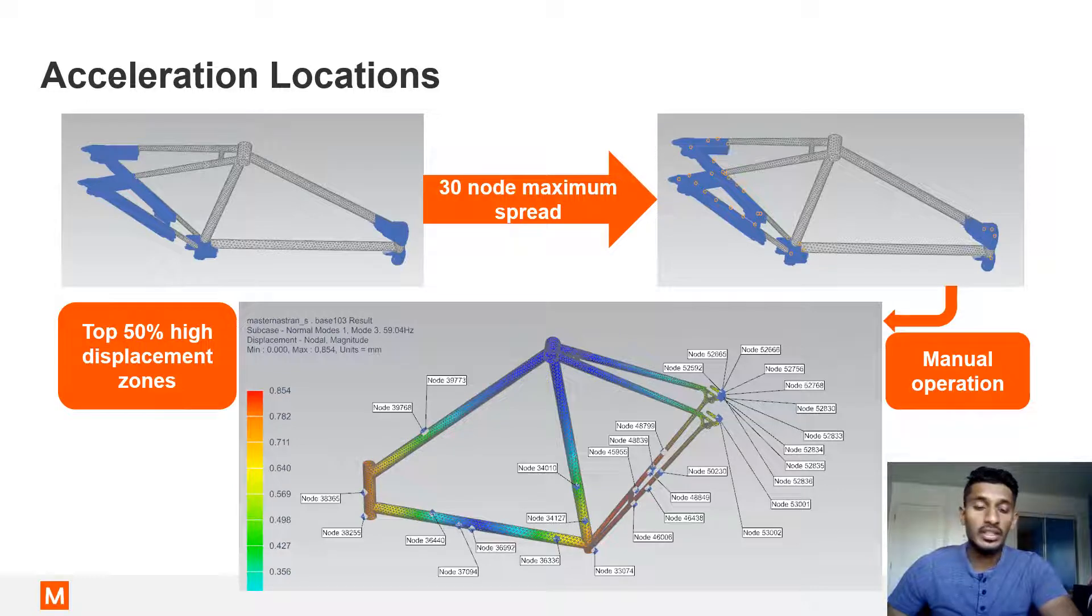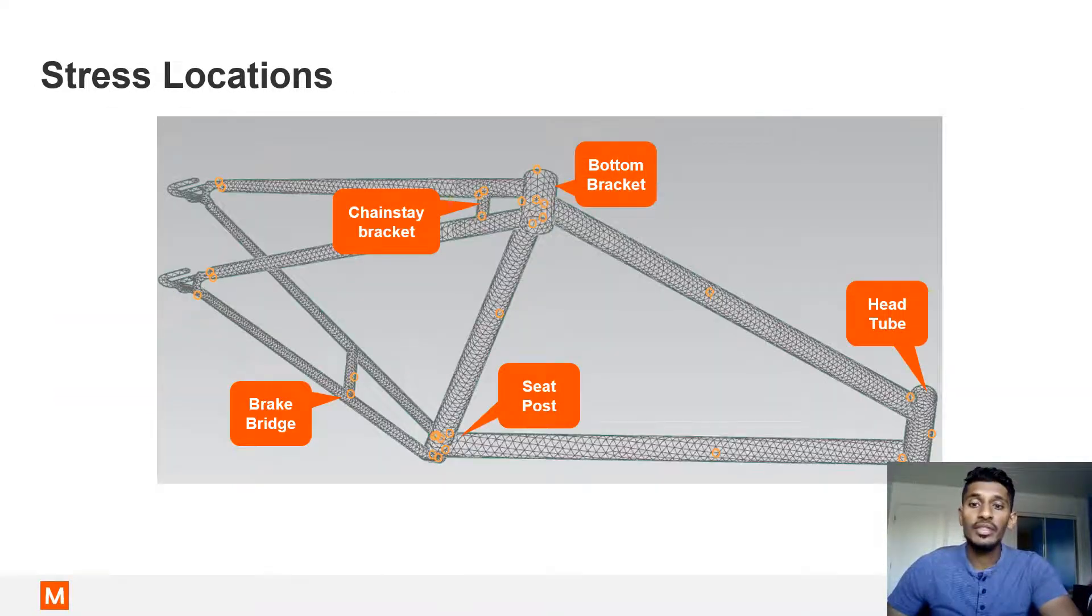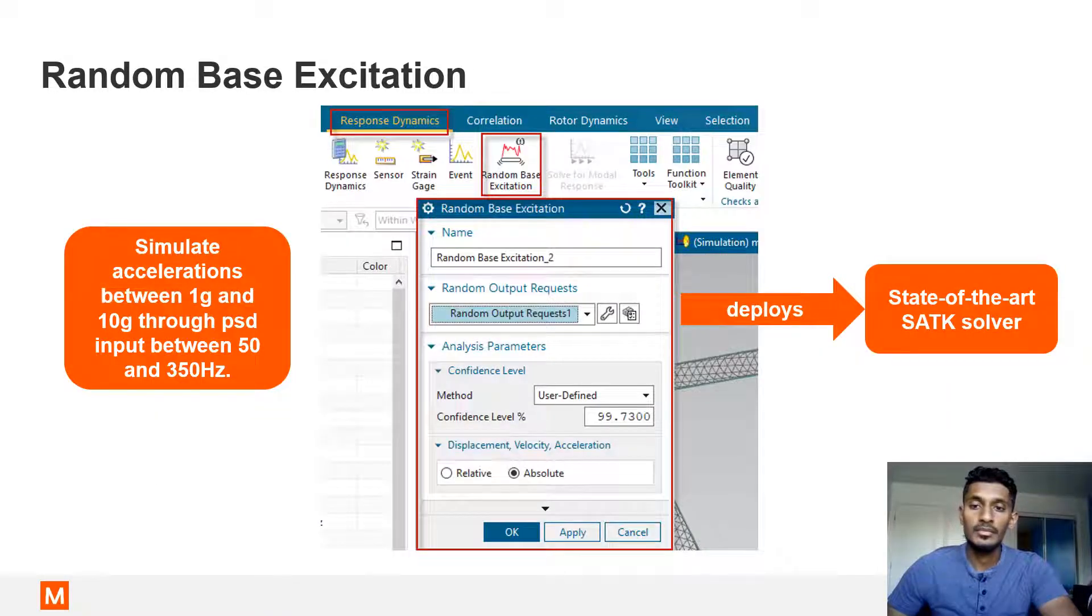Using the normal modes analysis, 30 locations for acceleration and 30 locations for stress were determined. Subsequently, the system is subject to random base excitations at each of the enforced motion locations in each degree of freedom. The random base excitation is an acceleration PSD between 1G and 10G in the range of 50 to 350 Hz. Peak one-sigma stresses and accelerations are thereby extracted for each simulation. This served as the data set used to train the base neural network. And in order to train the network, 27,000 of such simulations were performed.